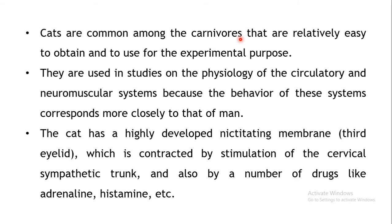The next animal is the cat; the species name is Felis catus. Cats are carnivorous animals that are easily available and are mostly used in studies on the circulatory system and neuromuscular system, because these systems closely resemble those of humans. Cats also have a highly developed nictitating membrane — the third eyelid — which is inactive in humans but active in cats, and its contraction can be affected by several drugs.